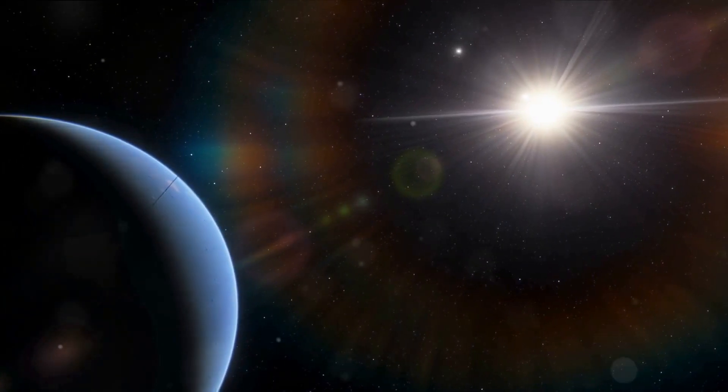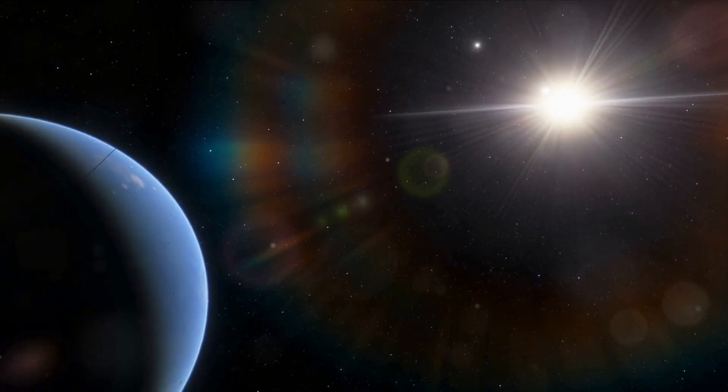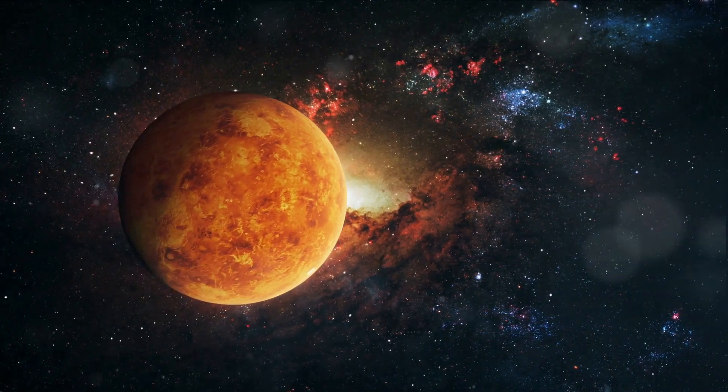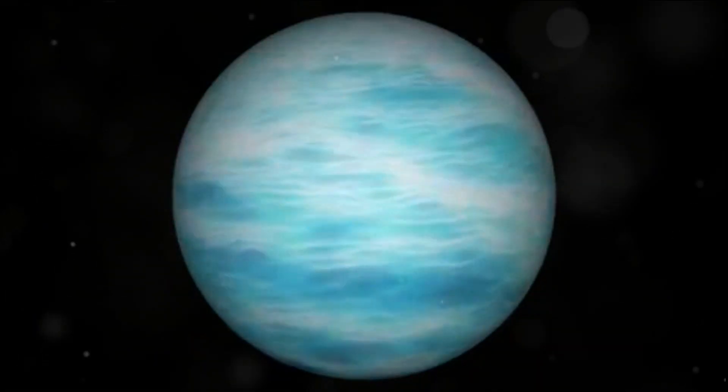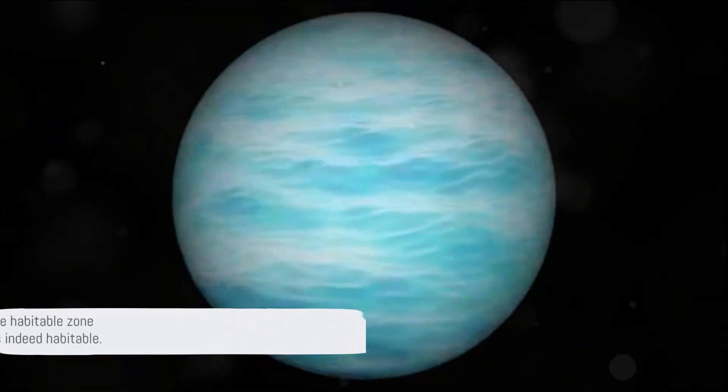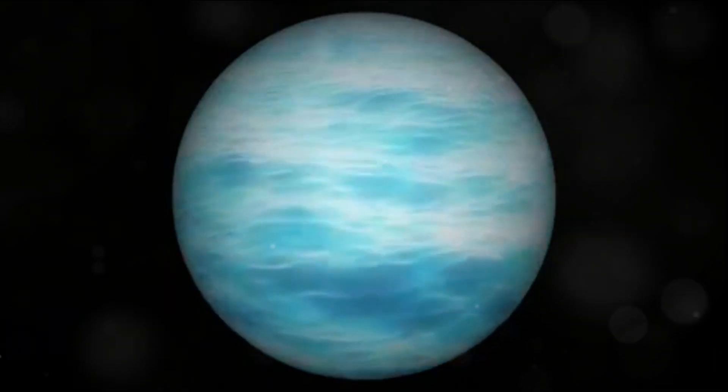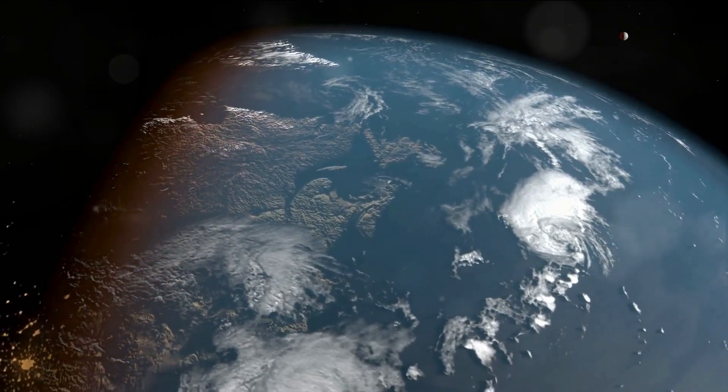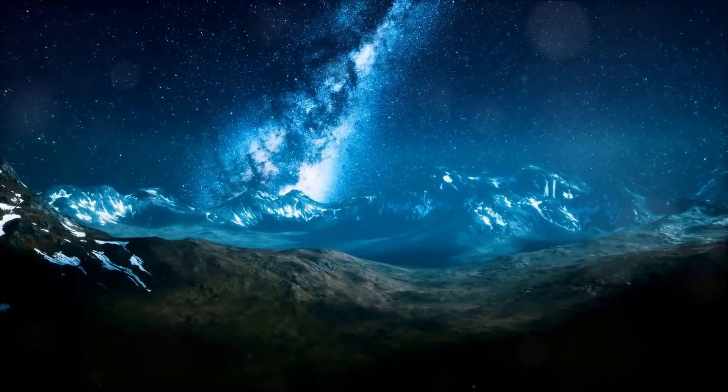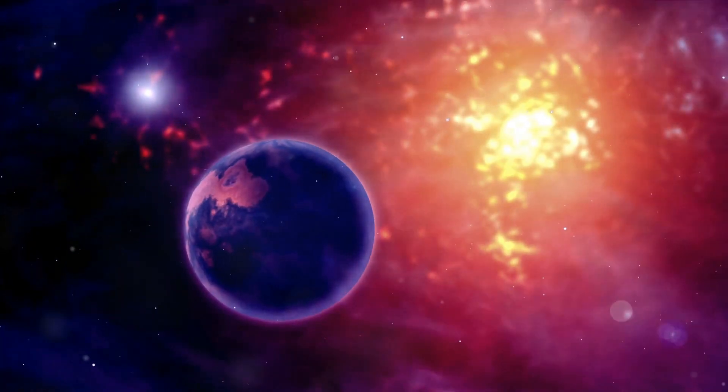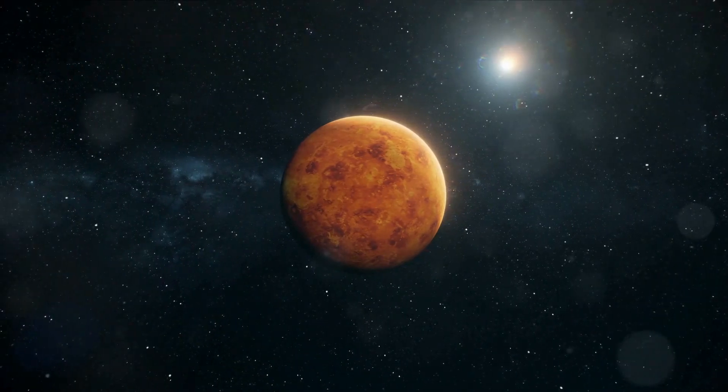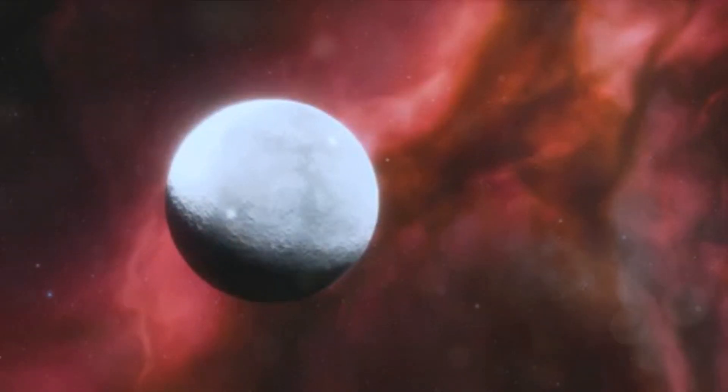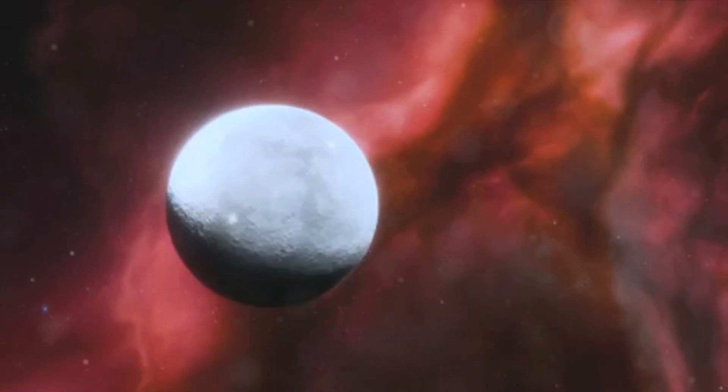But what makes Wolf 1069b truly fascinating is its location in the habitable zone of its host star. This is the region around a star where conditions might be just right for liquid water to exist on the surface of a planet. And where there's water, there could be life as we know it. This possibility has sparked significant interest among scientists and space enthusiasts alike. However, being in the habitable zone doesn't guarantee that Wolf 1069b is indeed habitable. There are many other factors, including the planet's atmosphere and the activity of its star, that can influence its potential to support life. Scientists are eager to learn more about Wolf 1069b and other Earth-like exoplanets to refine our understanding of habitability in the universe.